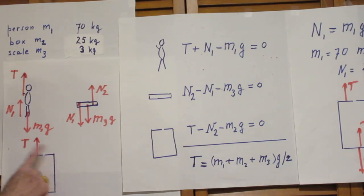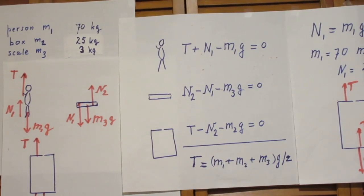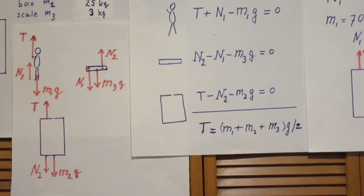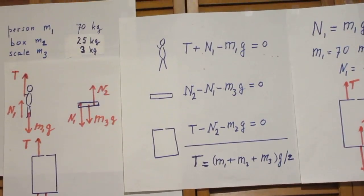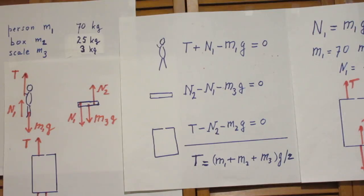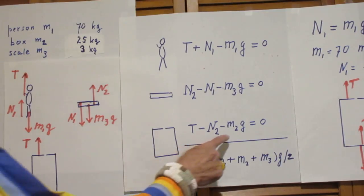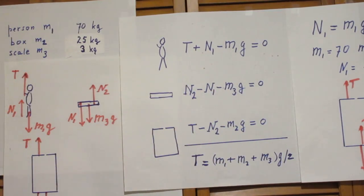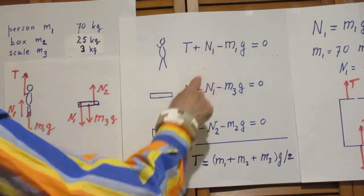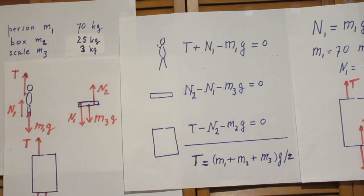And then on the box itself, look at the box on the left. On the box itself, T is up, N2 is down, and m2g is down, is zero. Three equations with three unknowns, T, N1, and N2.